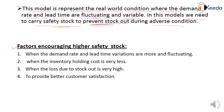Factors encouraging higher safety stock: What factors encourage maintaining higher safety stock in our organization? First, when the demand rate and lead time variation are more and fluctuating. If your demand rate and lead time variation are more and more fluctuating, we need more safety stock in our organization. Second, when the inventory holding cost is very less — if your inventory holding cost is less, the organization can easily maintain higher safety stock.